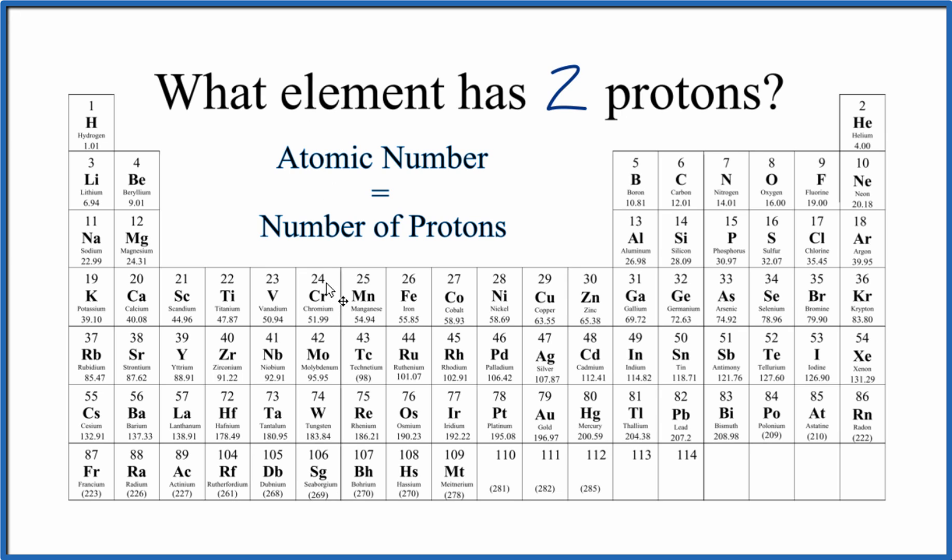When we look at the atomic number, that's the number that's above the element symbol, like the one above hydrogen or the two above helium.